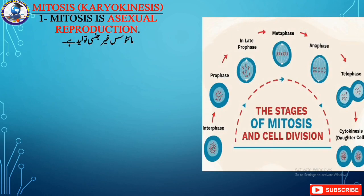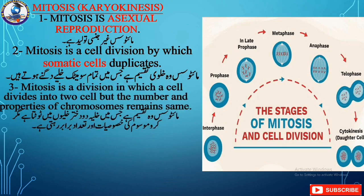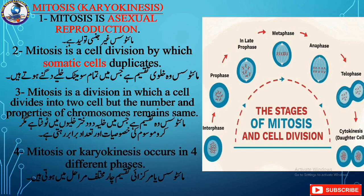Mitosis, or karyokinesis, is asexual reproduction because there is no fusion of male or female gametes. Mitosis is a cell division by which only somatic cells duplicate. All the cells of a body other than sex cells or germ cells are known as somatic cells. In mitosis, a cell divides into two cells, but the important thing is that the number and properties of chromosomes remain the same.